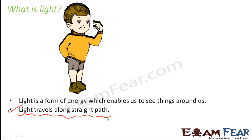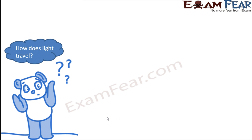The speed of light is very large. Light travels at a very high speed of around 3 × 10⁸ meters per second, which is an extremely high speed.